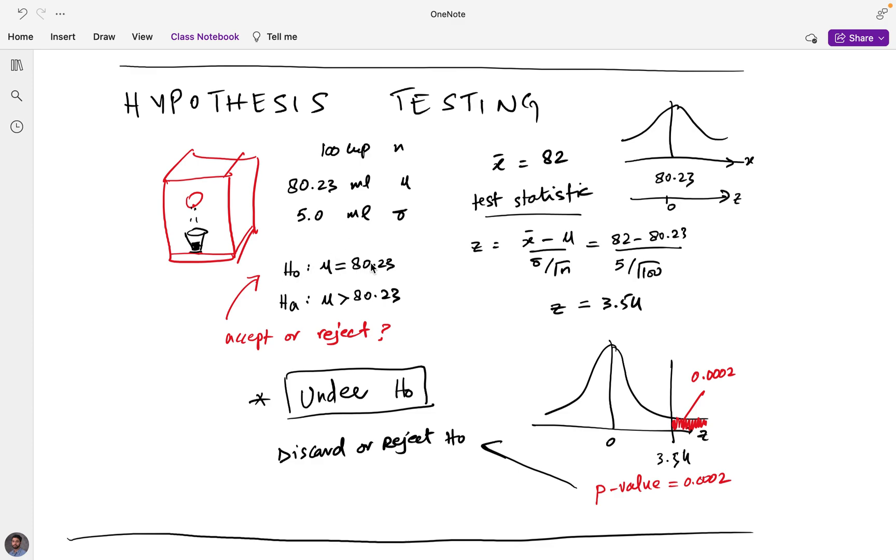And then we defined our alternative hypothesis as mean being greater than 80.23. We had a sample mean of 82 and we defined a test statistic z-value which translated into 3.54, corresponded to a 0.0002 area or probability.